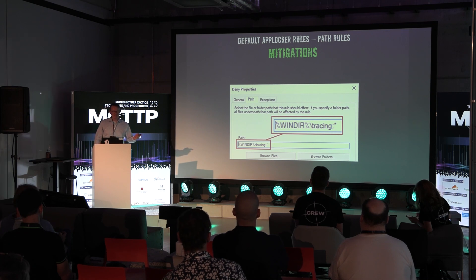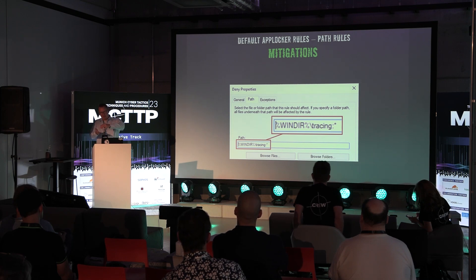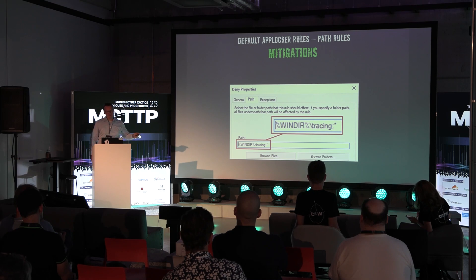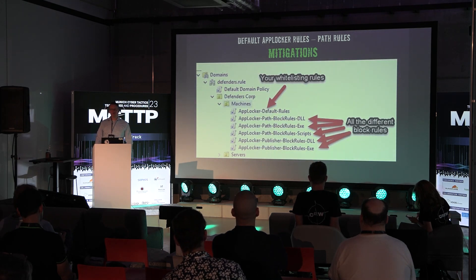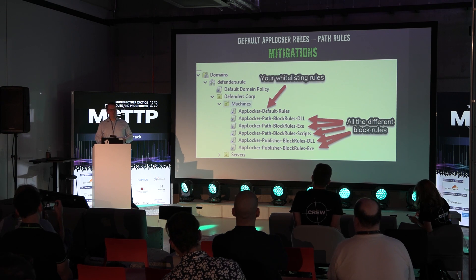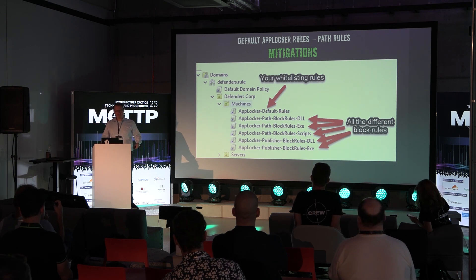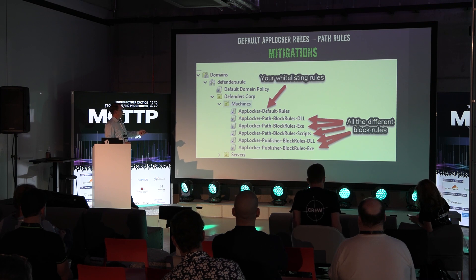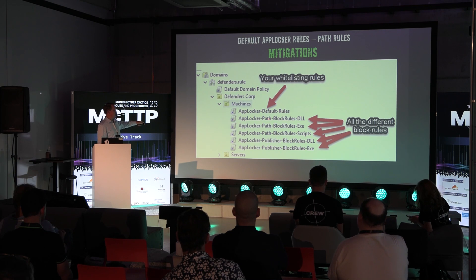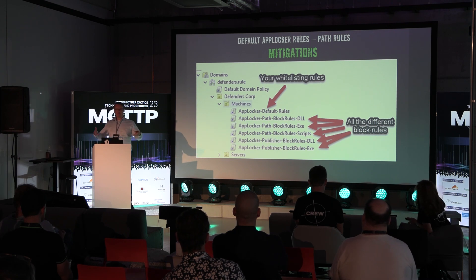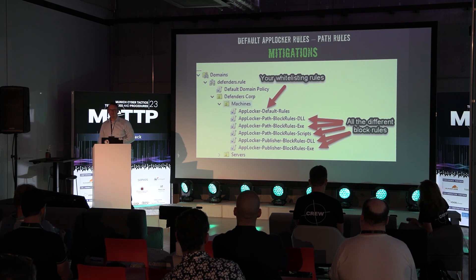When you start defining these rules, this was one example requiring two deny rules, so the list becomes pretty huge over time. I recommend organizing your group policies differently from Microsoft documentation: have one GPO at the top for allow rules, and for each type of blockage, create separate group policies. AppLocker combines multiple policies into a single rule set and applies it, so it's better to organize it that way.